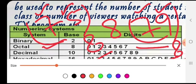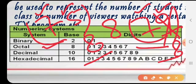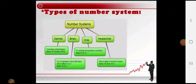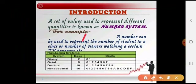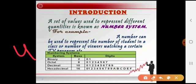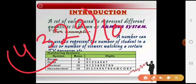Jo 79 hai, usme se 7 jo hai woh digit humari include hoti hai, lekin jo 9 number hai woh hamare octal number mein represent nahi hota. Isliye jo humari first value 75 hai, yeh ek correct octal number system hai. Jabki jo another value 79 hai, woh ek wrong value hai kyunki yeh octal number system ko represent nahi karti. Isi tarah se decimal number system, jiska base 10 hai, ismein 0,1,2,3,4,5,6,7,8,9 — total 10 digits hoti hain.